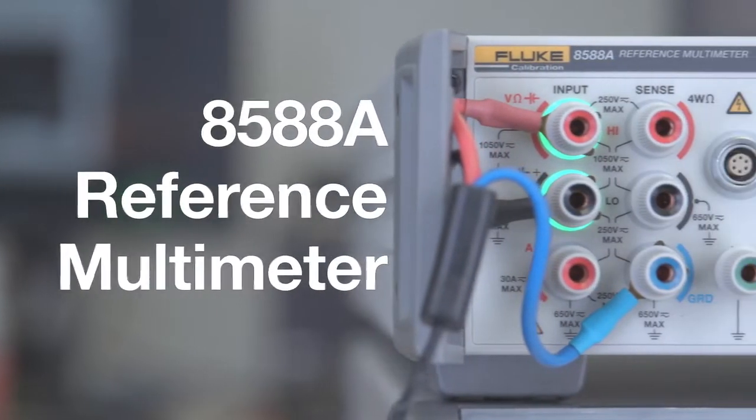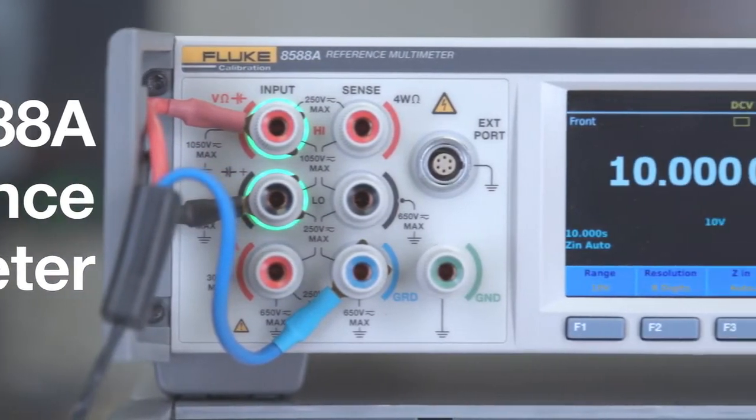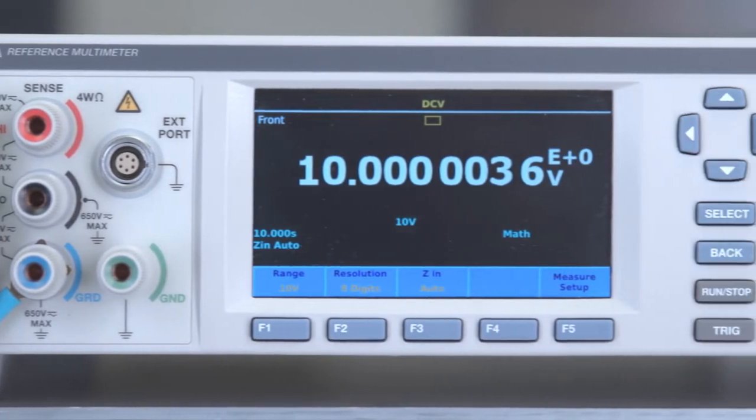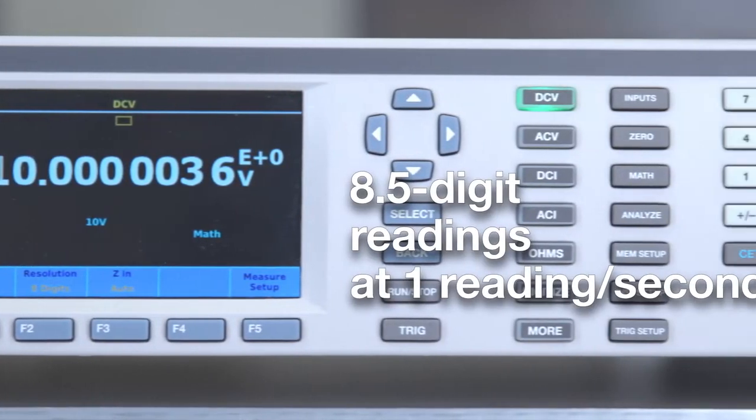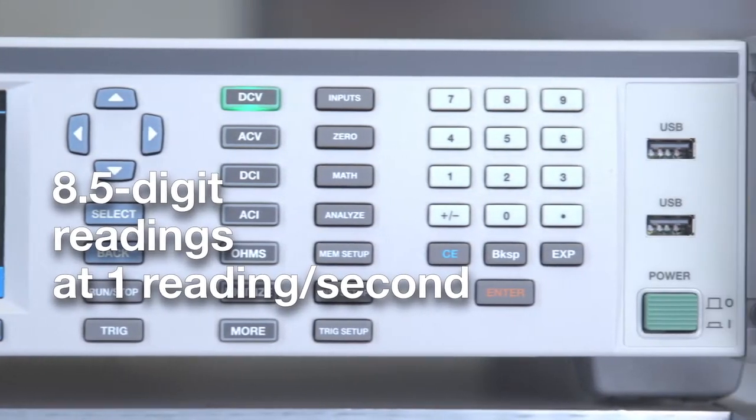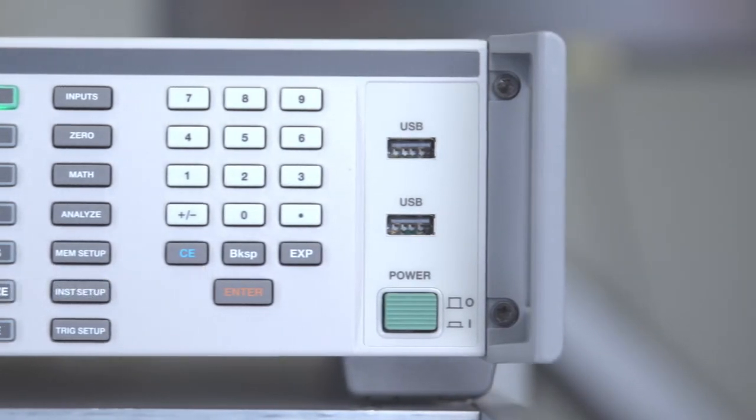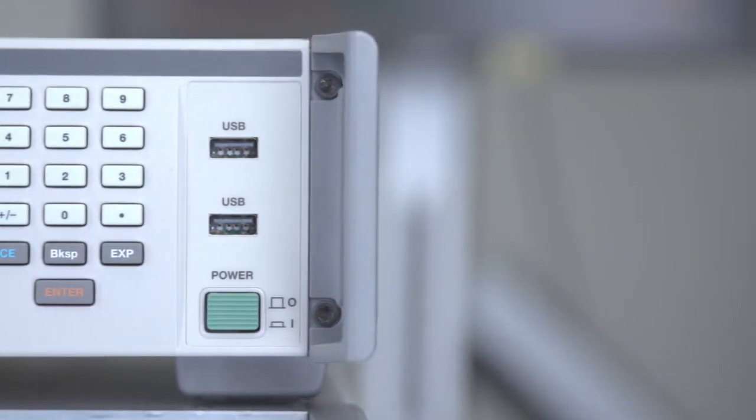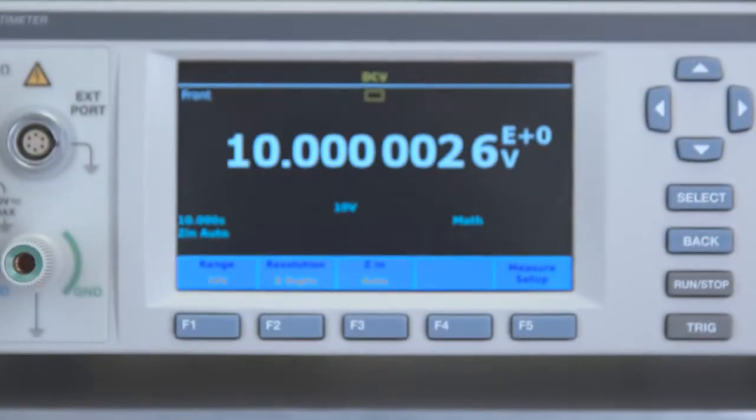Fluke Calibration introduces the 8588A Reference Multimeter, the world's most stable digitizing reference multimeter. It measures a stable 8.5-digit DC voltage in one second that will not drift beyond 3.5 ppm in 365 days.